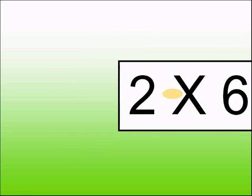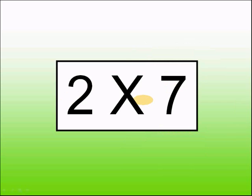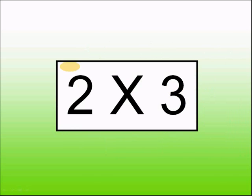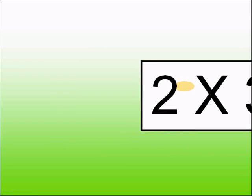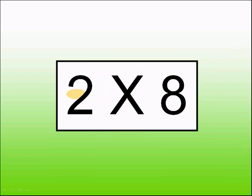What is two times six? It's twelve. What is two times one? Two. What is two times seven? Fourteen. What is two times three? It's six. What is two times two? It's four. What is two times eight? It's sixteen.